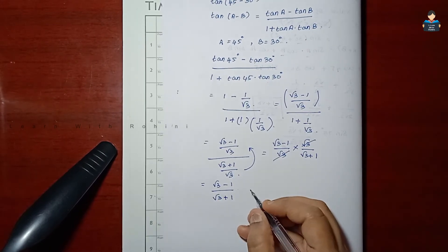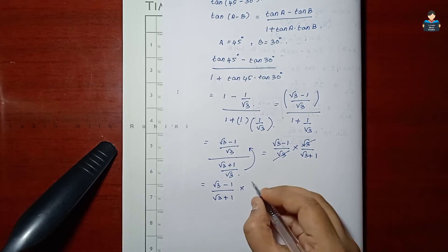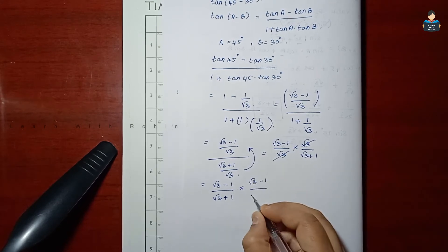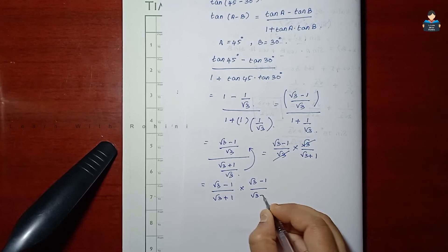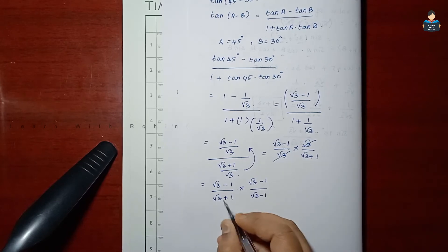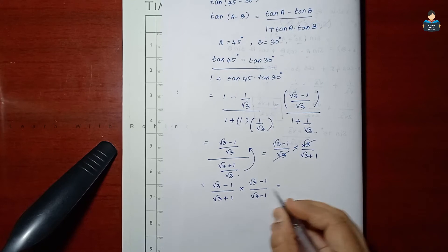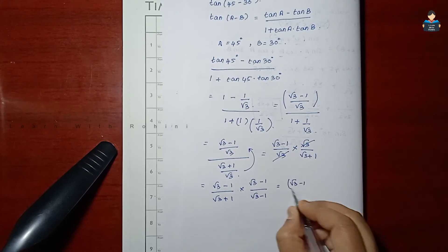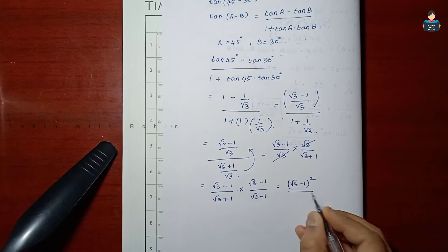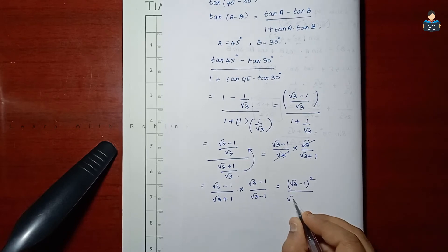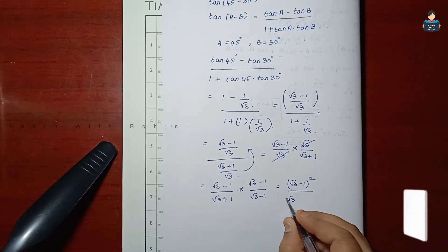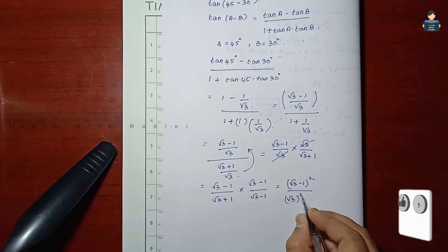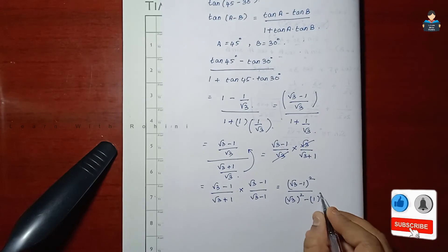Now we rationalize. We multiply numerator and denominator by root 3 minus 1, which is the opposite sign of the denominator. This gives us root 3 minus 1 whole square in the numerator, and root 3 whole square minus 1 square in the denominator.